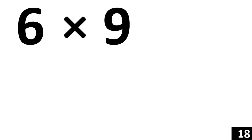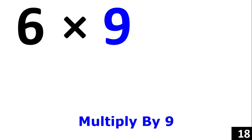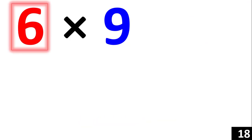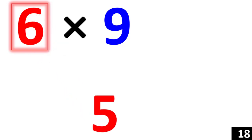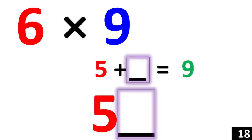For 6 times 9, we just use the rule of 9. Starting from the number 6, one less than 6 is 5. So 5 is your first number. Then we say, 5 plus what number would give us 9?